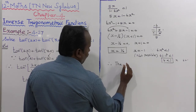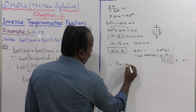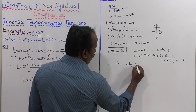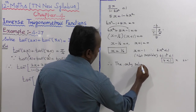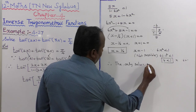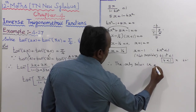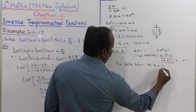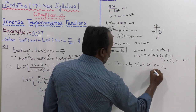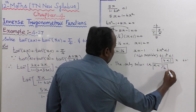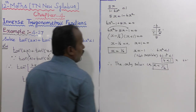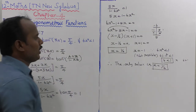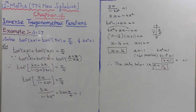Therefore, the only solution is x equals 1 by 6. The solution x equals minus 1 does not exist.